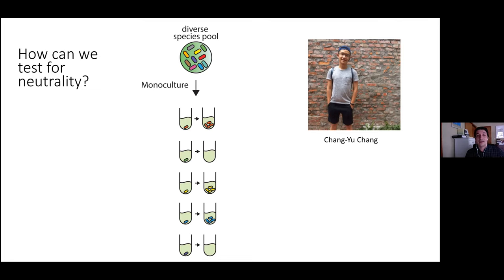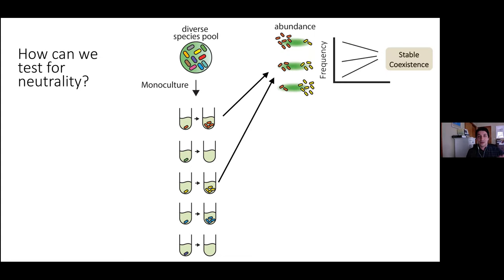What Chang has been doing is testing this hypothesis. He has done a massive amount of work isolating bacteria from all of our glucose communities and competing them at different frequencies. He isolates all the members, grows them in monoculture — some grow, some don't — and for those that do grow, he mixes them at different abundances: one species at high abundance relative to another, then at equal abundances, then where the first is rare and the second is common.